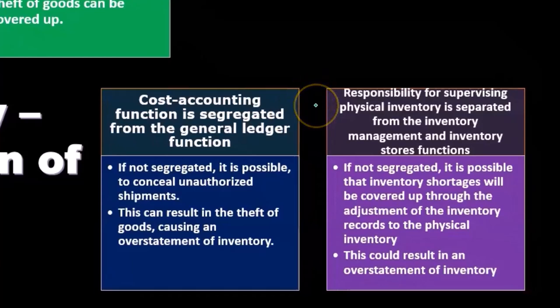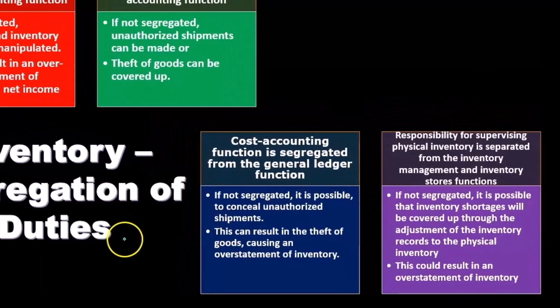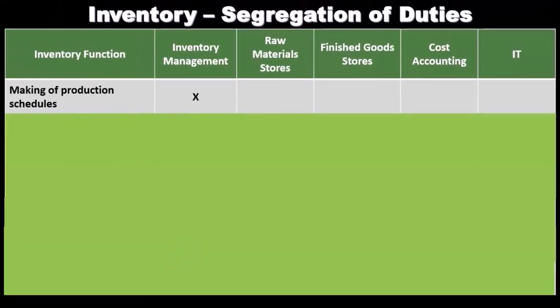Because the functions are not separated, one could adjust the inventory records to match the physical inventory, covering up shortages. This could result in an overstatement of inventory.